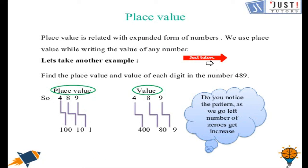Let's move to our next topic which is place value. We use values of the digits while writing the expanded form. And we use place value of each digit to write its value. So we can say that place value and value are connected to each other. Let's take an example. Here we have 489.